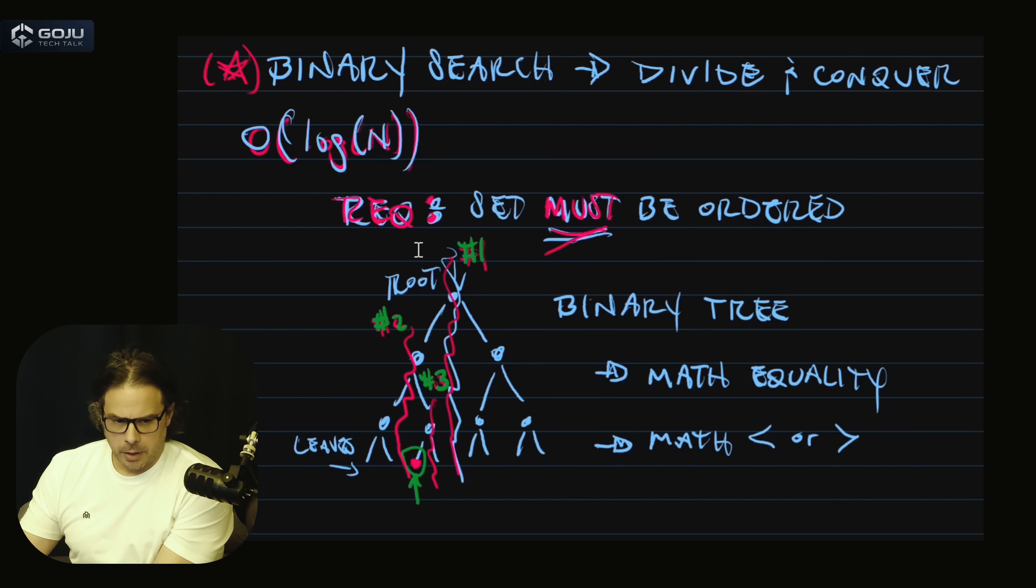So the way this works is we have our binary tree, and we're looking for some value. Step one is it will look at the root node, and see that the value we're looking for is less than this value. So it'll cut the tree in half, discard everything on the right, including the root node, and then continue.